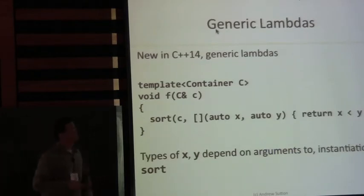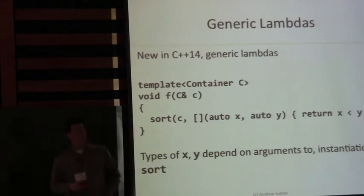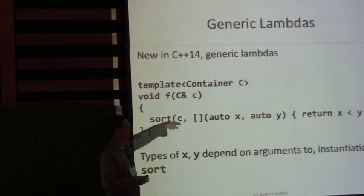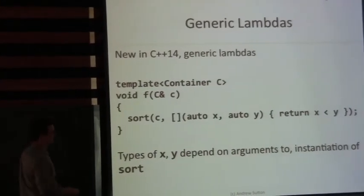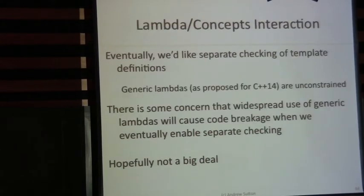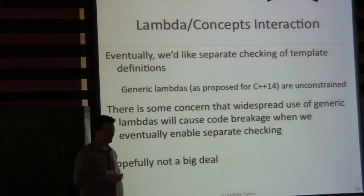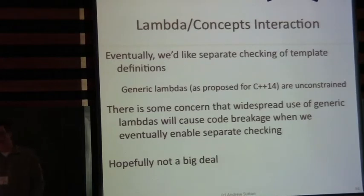Generic lambdas also show up in C++14. We can actually pass a functor to sort that takes two auto-declared parameters — types vary based on the instantiation context. It's a generic template lambda with deduced result type, also a C++14 feature. Unfortunately, there's a long-term interaction between concepts and generic lambdas. Eventually we'd like to have separate checking for templates, but generic lambdas that went into C++14 are unconstrained, and there's been concern that widespread use of unconstrained generic lambdas may lead to breakage when you enable separate checking.